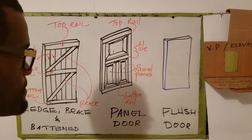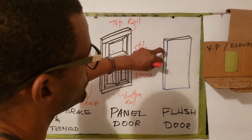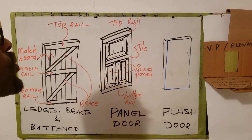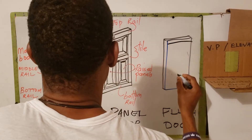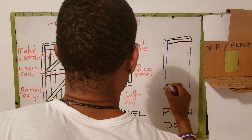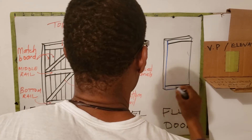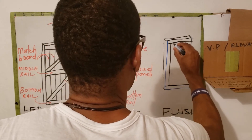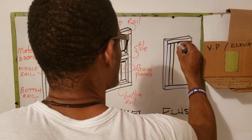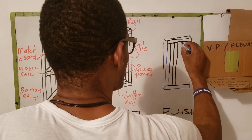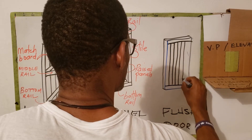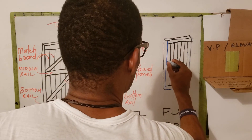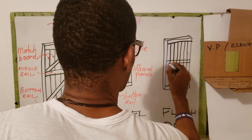I draw this flat then I add a little angle to it for the oblique. This is the thickness - and in reality this would have been way too thick. The door is typically two inches. This is our top rail, and I would draw my match boards.